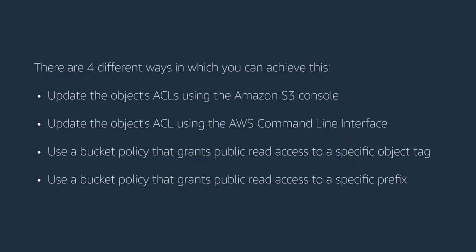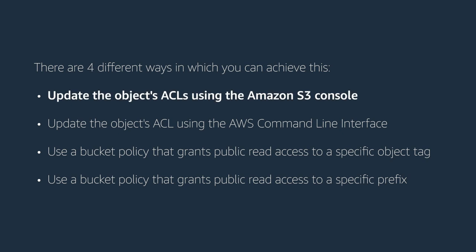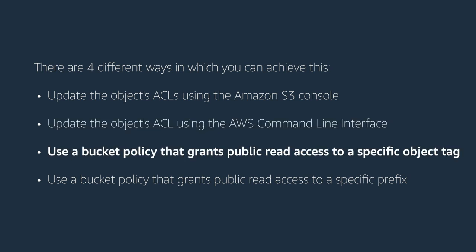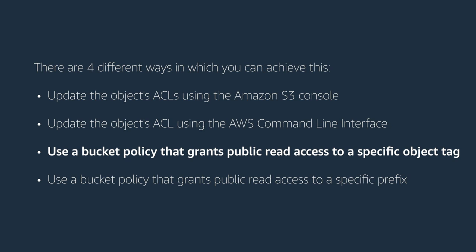There are four different ways in which you can achieve this. Update the objects ACLs using the Amazon S3 console. Update the objects ACL using the AWS command line interface. Use a bucket policy that grants public read access to a specific object tag. Use a bucket policy that grants public read access to a specific prefix.